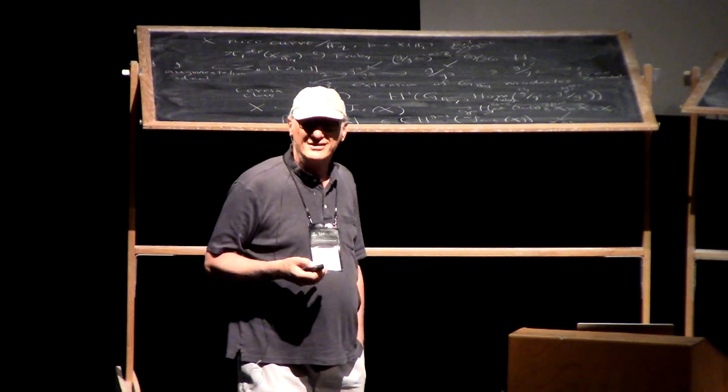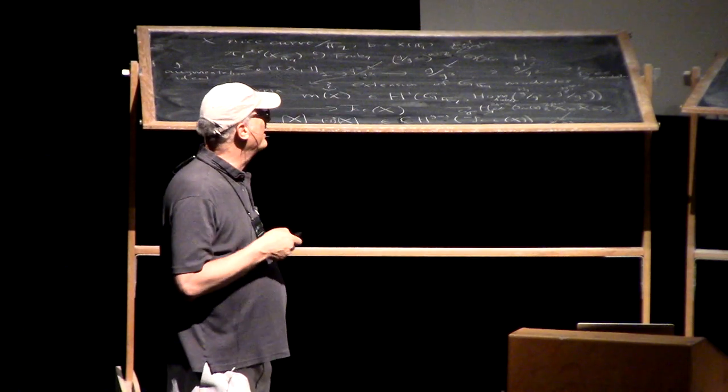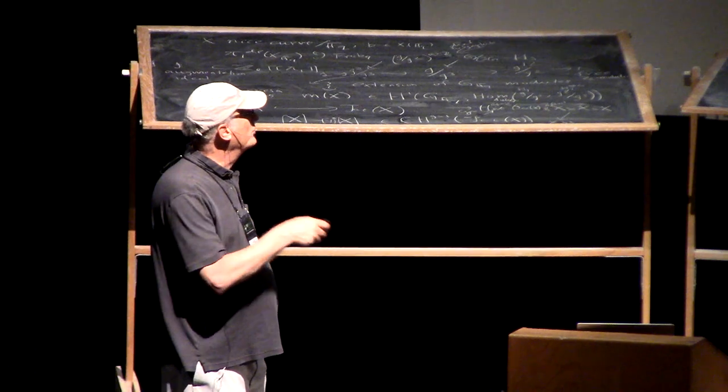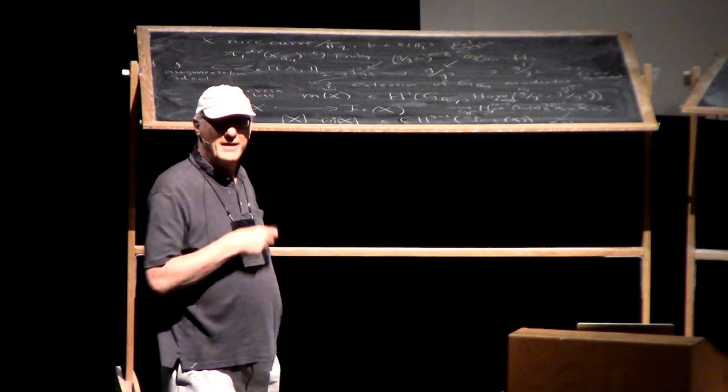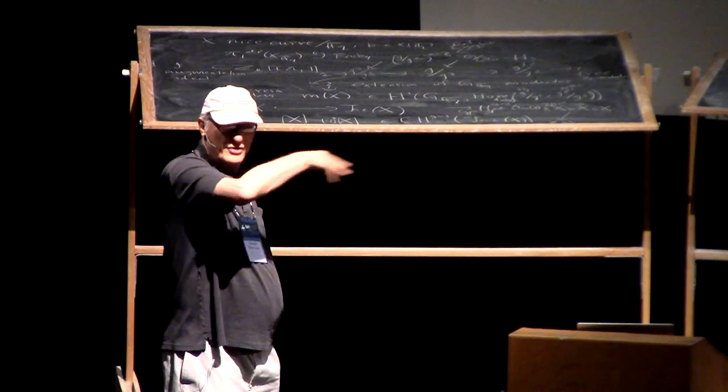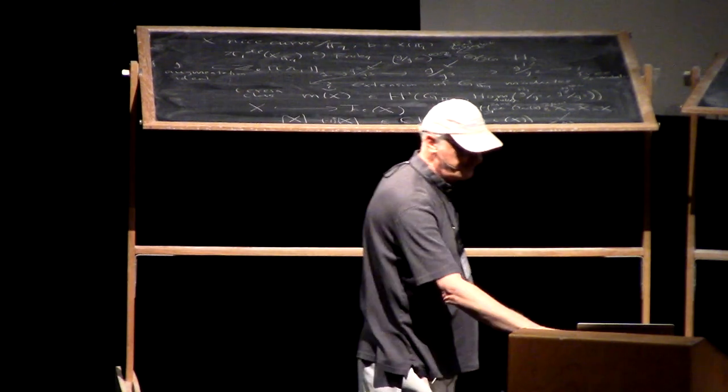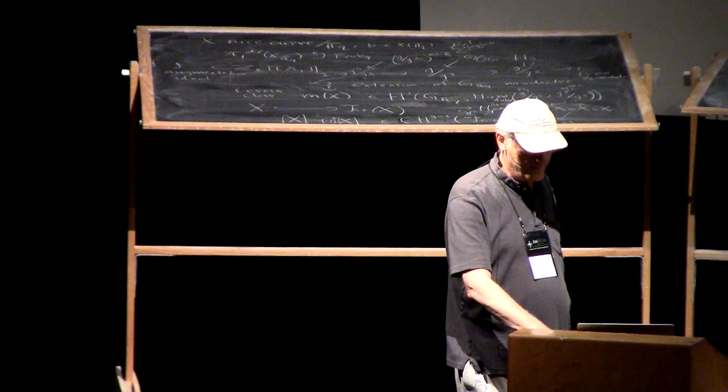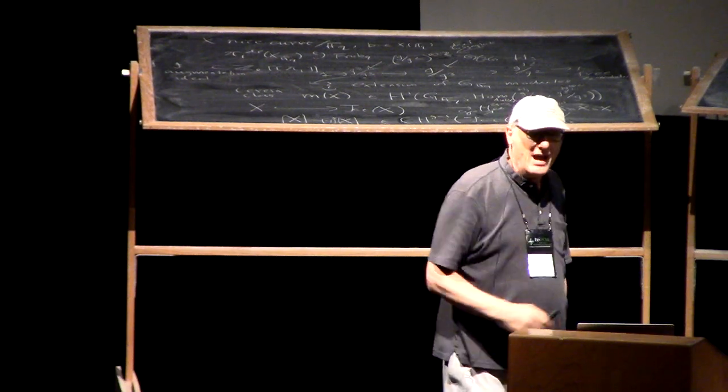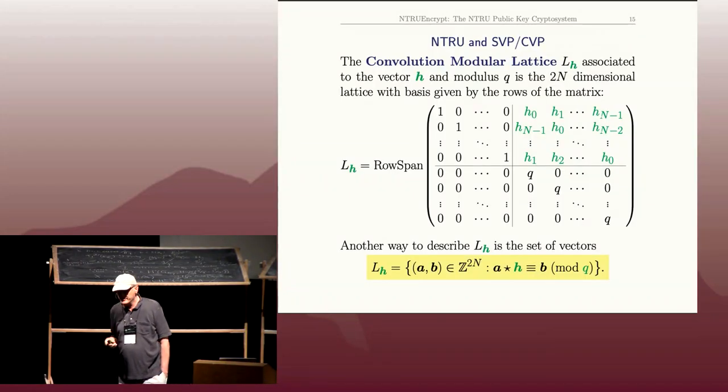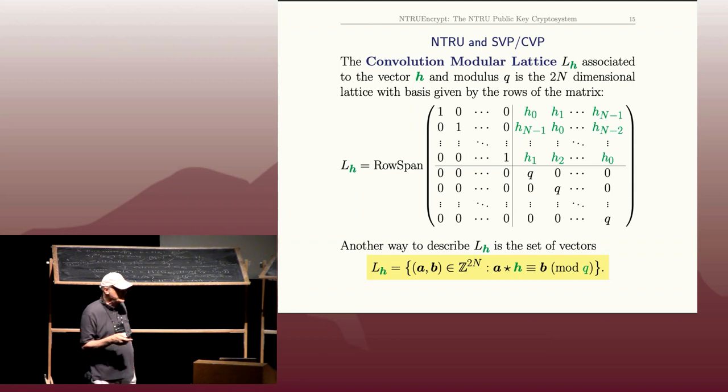He's kind of converted me to be a row vector person, so we'll take the rows of this rather than the columns. Each row is a vector, and I'm taking the 2n-dimensional lattice that they span. Here's another way to describe it, which is convenient if you're doing computation.